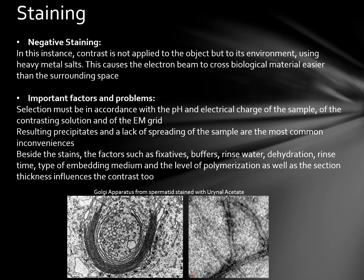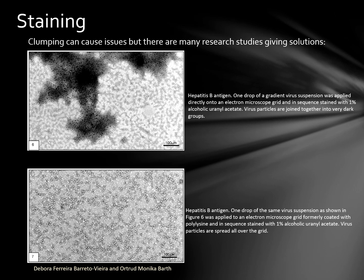The most important problem you will probably encounter with sample preparation for STEM is clumping or agglomeration. This can usually be prevented by diluting your sample properly or by using other methods. For example, one study showed hepatitis B antigen virus particles joined together in groups, but when an electron microscope grid formally coated with polylysine was used, the virus particles were more spread out over the grid. There is plenty of research and literature available to find solutions, and it is also a good idea to speak to analysts of microscopes to establish a good procedure.